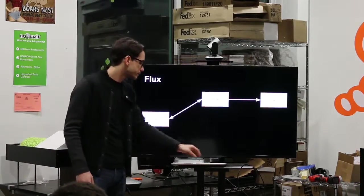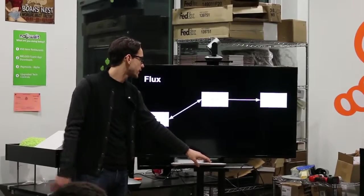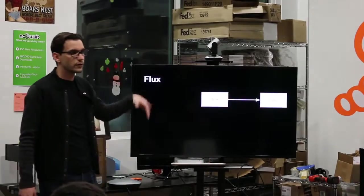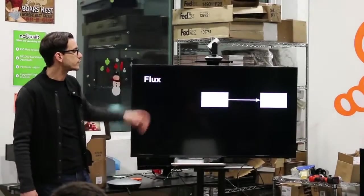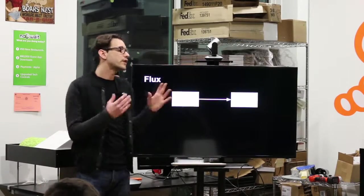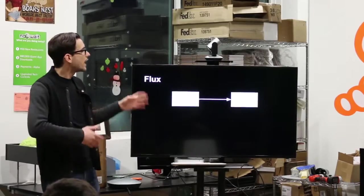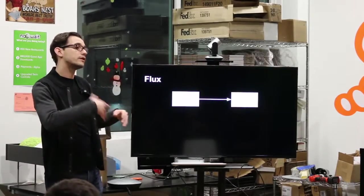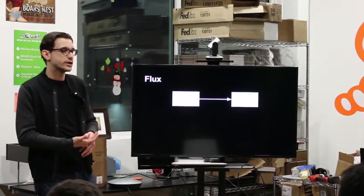Now that our store tells the view what to do, we take away the arrowhead. The store always tells the view what to do. The view never goes back to the store and says, hey, you need to do something. So, since the store also has the model, we take that away, and now we only have these two rectangles.